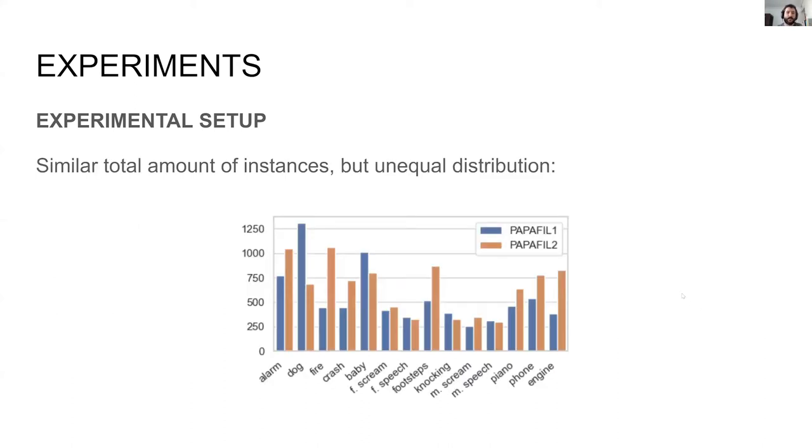The graphic here shows the different amount of sound events of each class after the dataset processing for both approaches. Although the total amount of events is similar, we can observe some sound classes with significant differences. For instance, the dog class has almost twice samples in PapaFil 1, while the inverse situation happens for fire, footsteps, and engine sound classes. Such differences might be explained by different criteria applied for the consideration of event temporal activations.